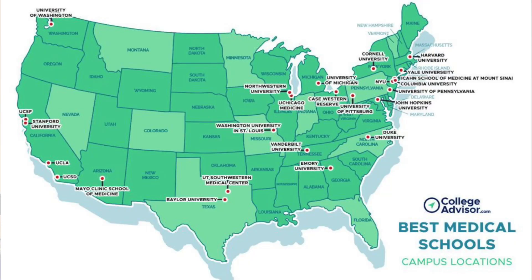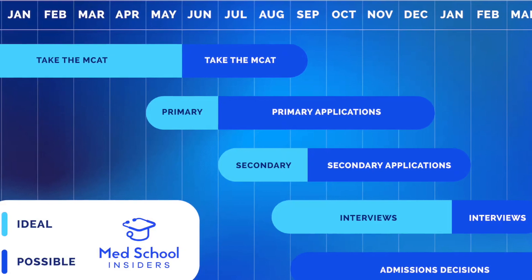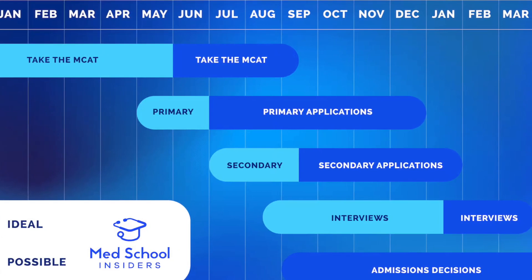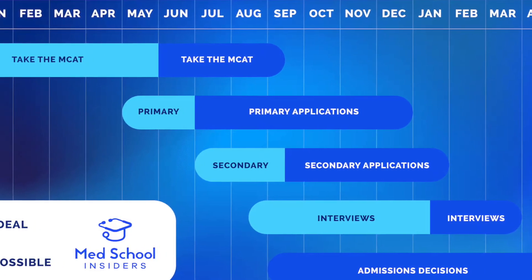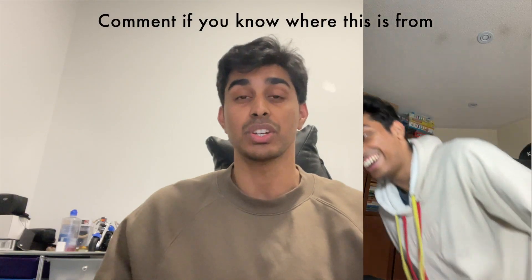Thinking of applying to medical schools in the United States, whether you're from the U.S. or not, we're going to be covering the exact steps that you need to take in order to get that coveted admission into anywhere from Stanford to Harvard. This video is going to be a general guide, complete with the timeline that you need to follow to complete all the necessary steps. First things first, let's identify the key components of your application process.